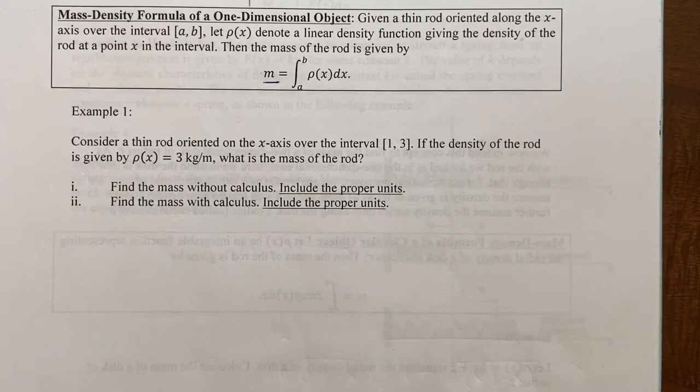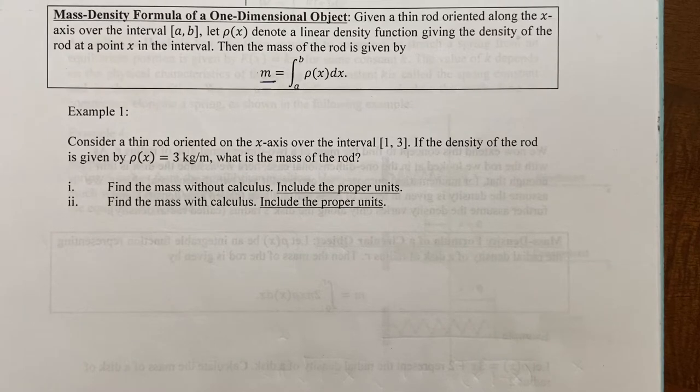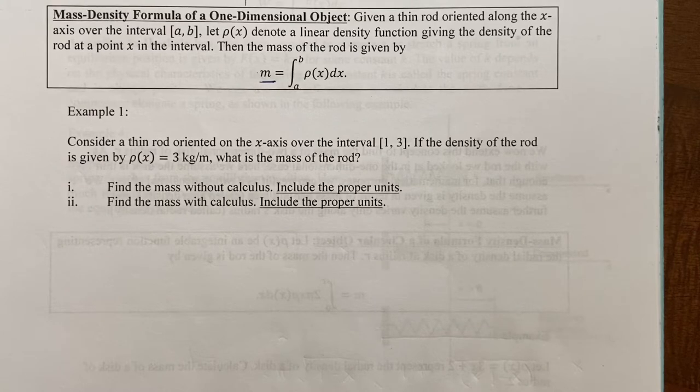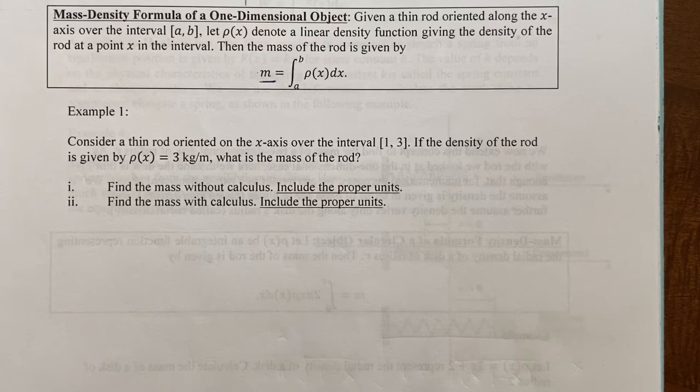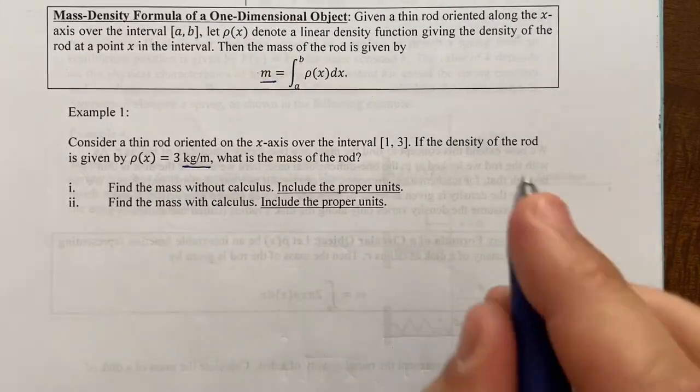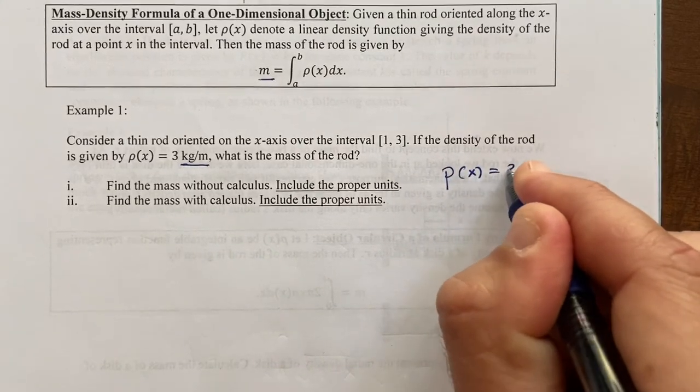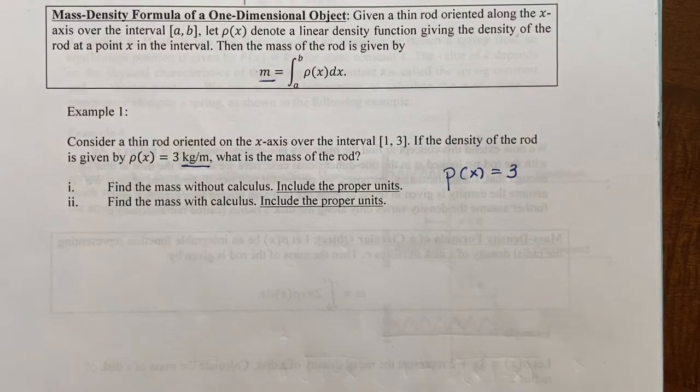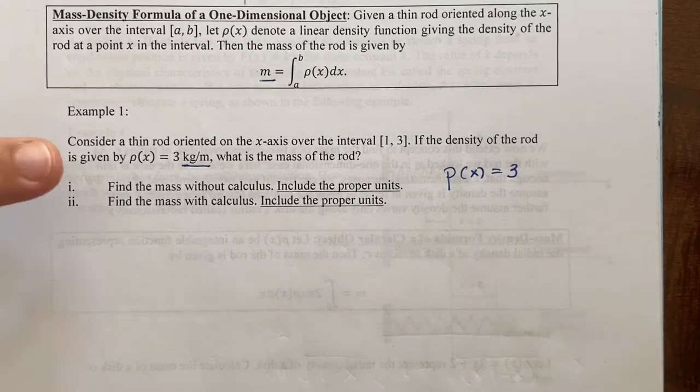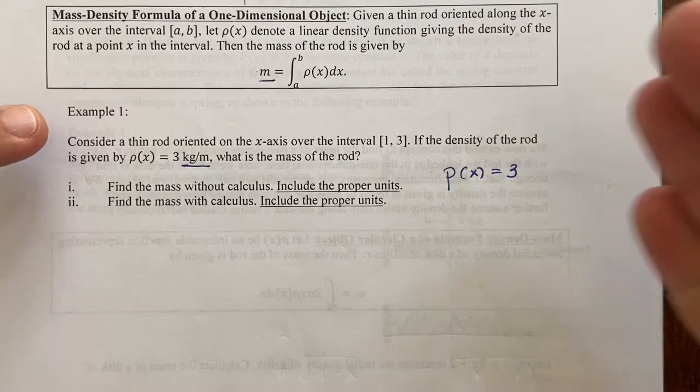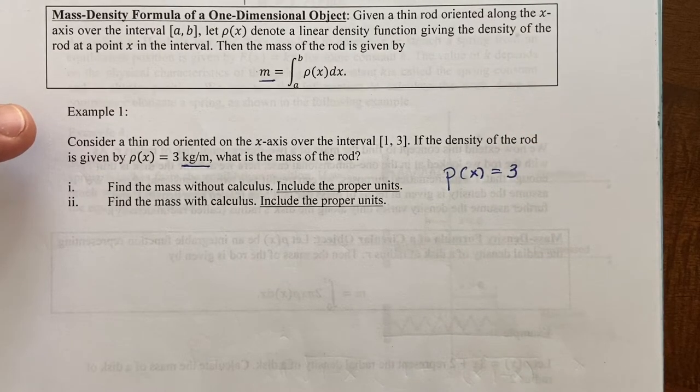So here's a particular case. It says consider a thin rod oriented on the x-axis over the interval one to three. If the density of the rod is given by this rho of x, so that's you can call it P if you want, but I think that's meant to be Greek letter rho, often used for density. So rho of x equals three and its units are kilograms per meter. It's just a statement of units here. So we have a constant density function. It's P of x just equals three. So in other words this rod, this kind of hypothetical thin rod is uniform in its material.